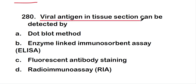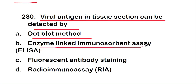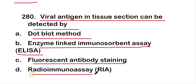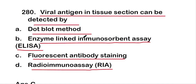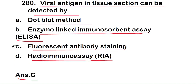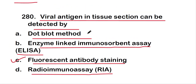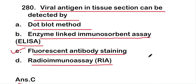The last question: viral antigen in tissue section can be detected by — dot blot method, ELISA, fluorescent antibody staining, or radioimmunoassay (RIA)? The right answer is option C — fluorescent antibody staining. Viral antigen in tissue section can be detected by fluorescent antibody staining. These are all 20 questions of this video — thank you for watching.